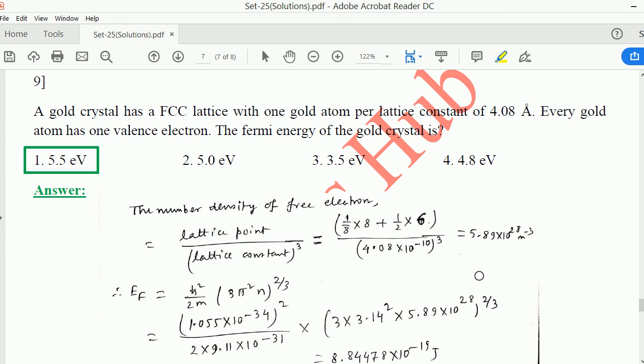Now moving to question number 9. A gold crystal has an FCC lattice with one gold atom per lattice constant of 4.08 angstroms. Every gold atom has one valence electron. The Fermi energy of the gold crystal is: We are given lattice constant and FCC lattice, and you have to find the Fermi energy. First, the expression of Fermi energy equals h-bar squared over 2m times (3 pi squared N) to the power 2/3. The only unknown quantity here is N, the electron concentration or number density of electrons.